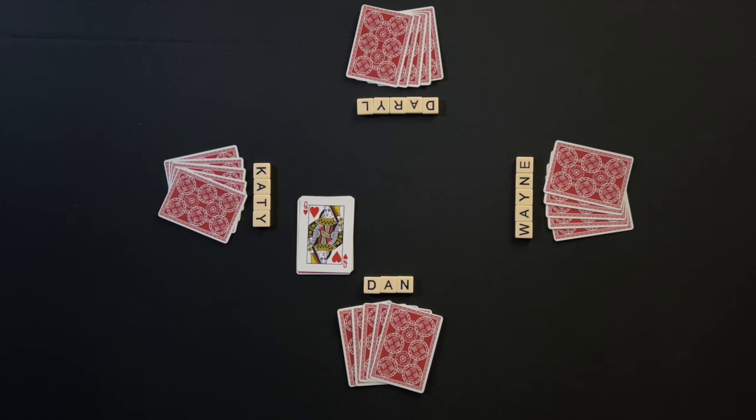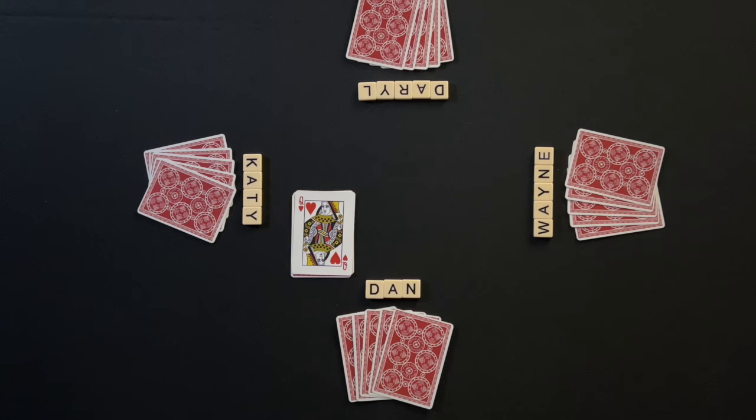The suit of the card that was flipped up during the deal is the first option for the Trump Suit. In this round, the first option of Trump is Hearts. The player left of the dealer has the first option to call Hearts as the Trump Suit or can pass. By calling Hearts as the Trump Suit, the player is saying that their team can win at least 3 out of 5 of the tricks during the round.